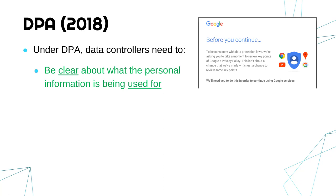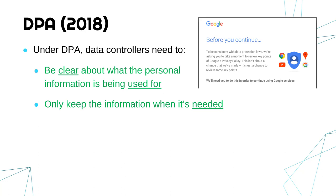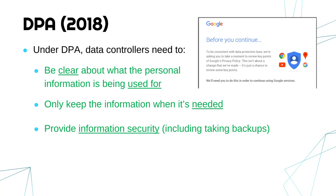The controller should only be keeping personal information when it is needed — the second it becomes unnecessary, it should be deleted permanently. They also need to provide information security under the law. The law doesn't specify exactly what this needs to be or how much they need to spend, but if there was a cyber attack and they didn't have security in place, that is when fines can really kick in. Security includes things like antivirus, firewalls, encryption, and also less obvious things like taking backups.